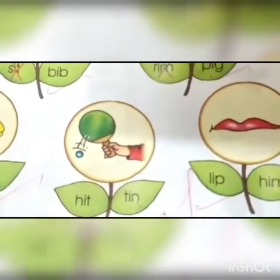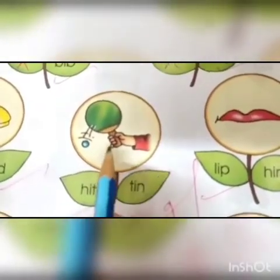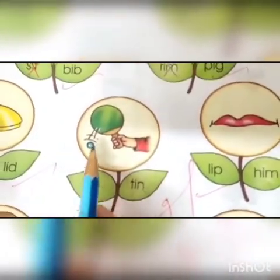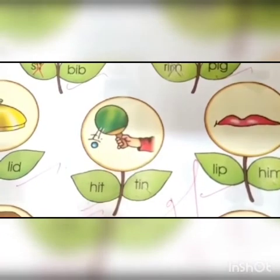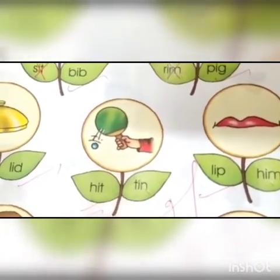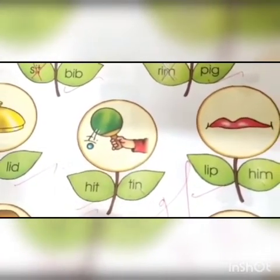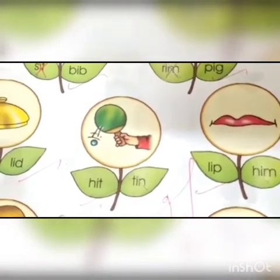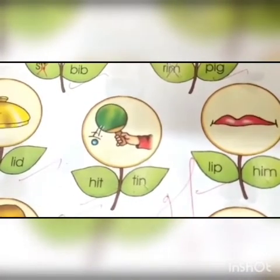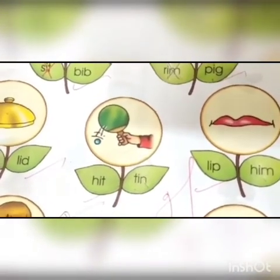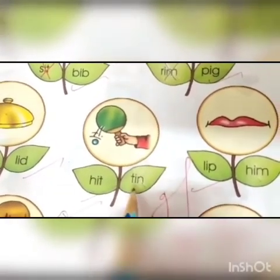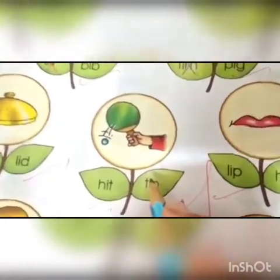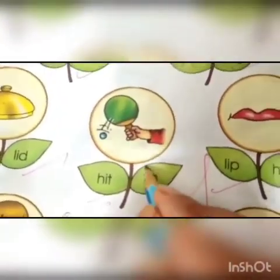Let's go to the next picture. Which picture is this? This is a hit. Now read the words given in the leaves: hit, tin. Which word does not belong to the picture? Tin. Now you will close the word tin.